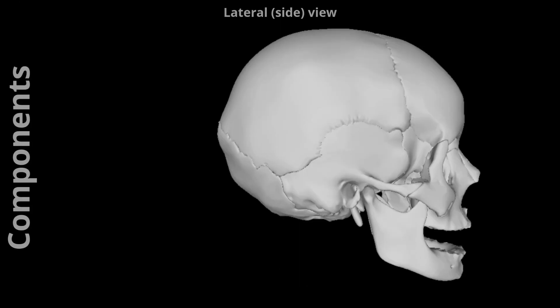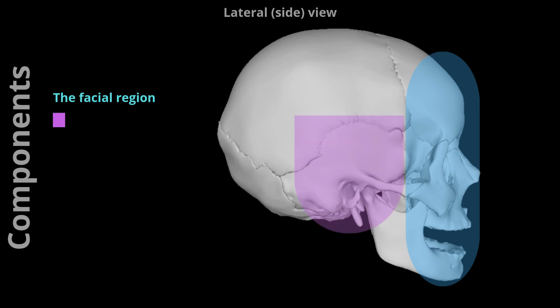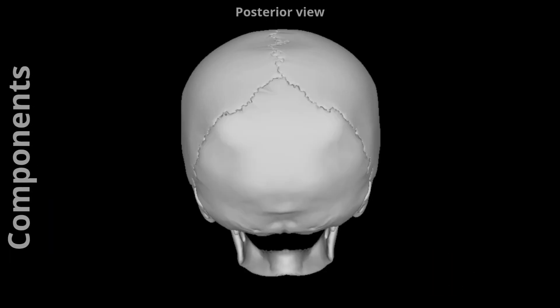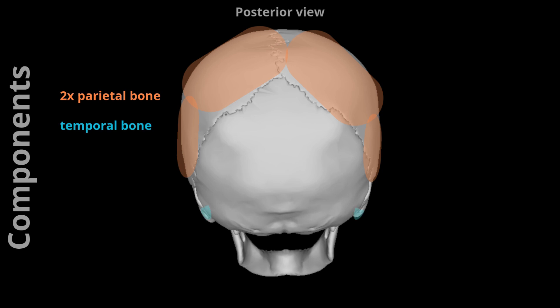Lateral (side) view: The lateral aspect of the skull can be divided into three regions — the facial region, the temporal region, and the occipital region. Posterior view: The posterior aspect of the skull is formed by the parietal bone superolaterally, the temporal bone inferolaterally, and the occipital bone centrally. Sometimes this view of the skull is referred to as the occipital view.